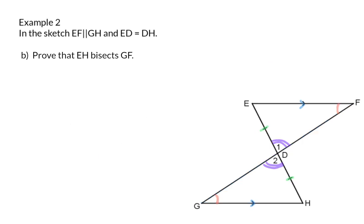Question B. Prove that EH bisects GF. This means we need to prove that when I draw line EH, where it intersects GF, it divides GF into two equal parts. And we actually already know that.